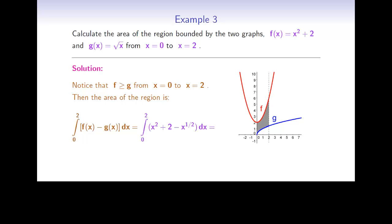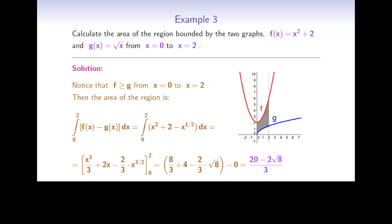We substitute in the functions and get the integral from 0 to 2 of x squared plus 2 minus x to the 1/2 dx. Note that the function g, square root of x, was written as x to the 1/2 power. We integrate and get x cubed over 3 plus 2x minus 2/3 times x to the 3/2, evaluated from 0 to 2. When x equals 2, we get 8/3 plus 4 minus 2/3 times the square root of 8; when x equals 0 the expression is 0. After simplifying, we get 20 minus 2 root 8, all over 3.